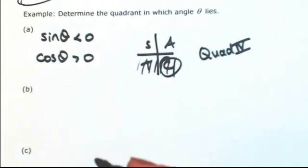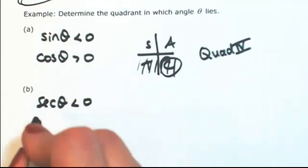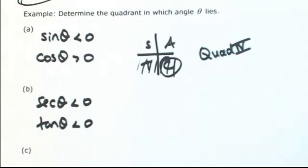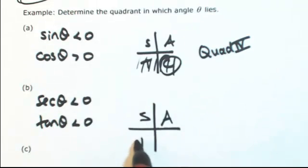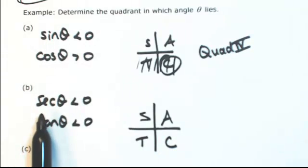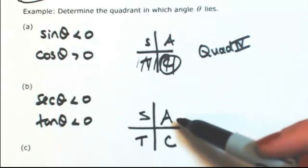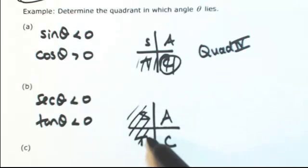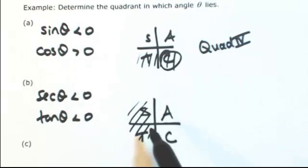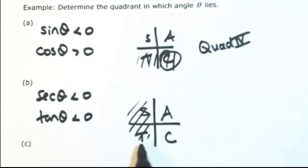Let's try another one. If secant of theta is negative and tangent of theta is negative — secant is the reciprocal of cosine, so we're looking for where cosine is negative. Cosine is positive in quadrants one and four (A and C), so cosine is negative in quadrants two and three. Of those two, tangent is negative in quadrant two, since tangent is positive in quadrant three. So theta is in the second quadrant.